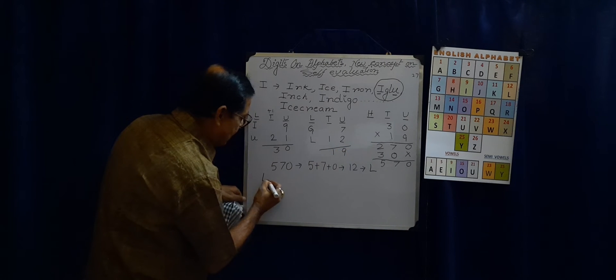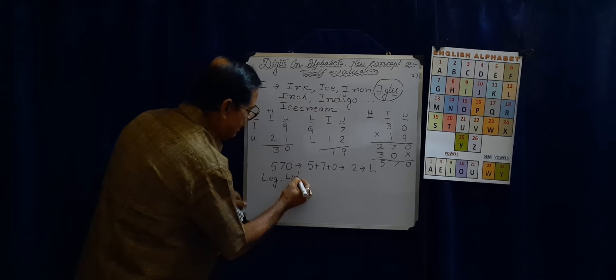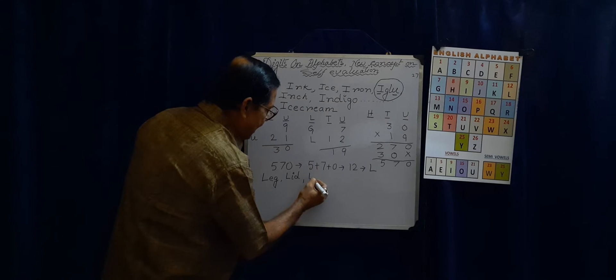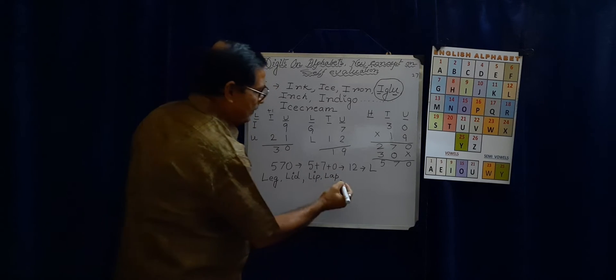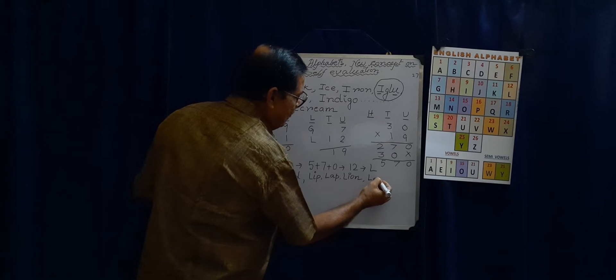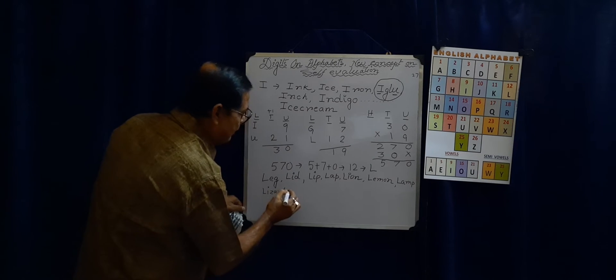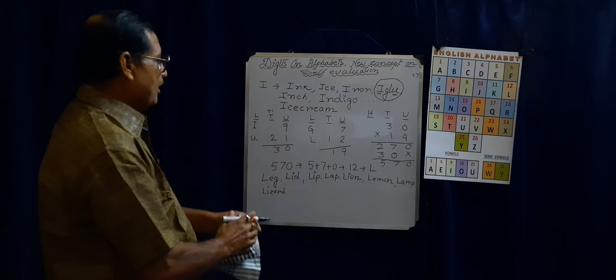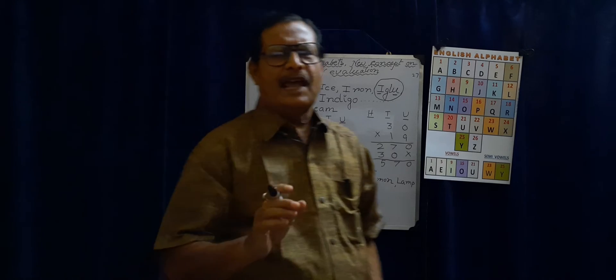L — we can write: LEG, LID, LIP, LIZARD, and so on. How many words did we make from L? 1, 2, 3, 4, 5, 6, 7, 8 — for any number of words. As many words as a loving child can write, please encourage them to write. Let them think and write lots of words.